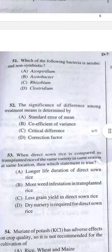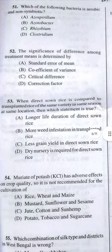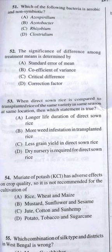Question 53: When direct seeded rice is compared to transplanted rice of the same variety in the same region and location, which statement is true? Answer C — less grain yield in direct seeded rice.